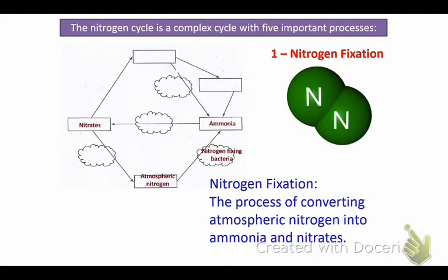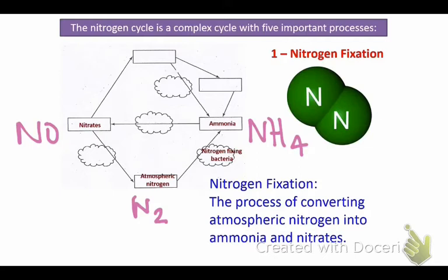We can see at the bottom of our figure that atmospheric nitrogen goes to the nitrogen-fixing bacteria, and it's able to take that N2 molecule and break it down and turn it into ammonia and into nitrates. That means it goes from N2 to NH4 to NO2. It's adding some things, changing the molecular structure, and making it usable by other living things.